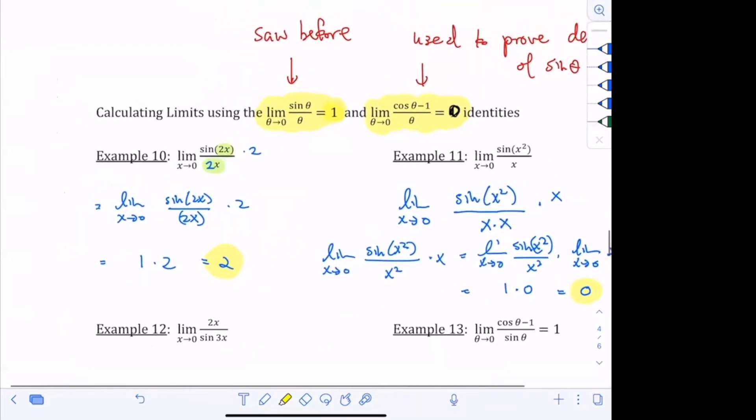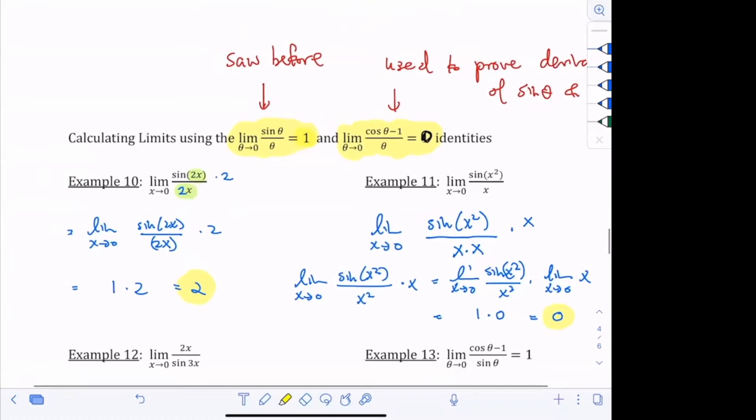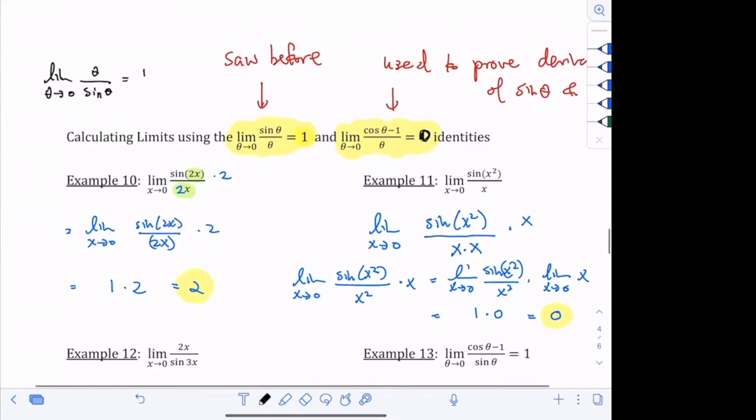Now, before we do example 12, I want to ask you guys a question. If I know that this identity here is true, then my question for you is, what is the limit as theta goes to 0 of theta over sine theta? Does anyone have any guesses as to what that might be equal to? Knowing this, can you tell me what this is equal to? Just take a guess. What would you guess this is equal to? Oh, I was thinking you would guess 1, Mario, not negative 1. The reason why I thought you were going to guess 1 is because we're flipping the left-hand side, right? So if we invert the left-hand side, it feels like we should invert the right-hand side as well. But 1 over 1 is just 1. Does that make sense? So this is just 1 over 1, which is just 1.